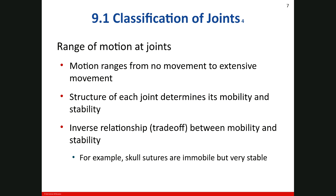The motion permitted at a joint ranges from no movement — such as where some skull bones interlock at a suture — to extensive movement, such as that seen in the shoulder where the humerus and the scapula articulate together. The structure of each joint determines both its mobility and its stability. There is an inverse relationship between mobility and stability in articulation. When the mobility of the joint increases, its stability decreases. In contrast, if a joint is immobile, it has maximum stability.